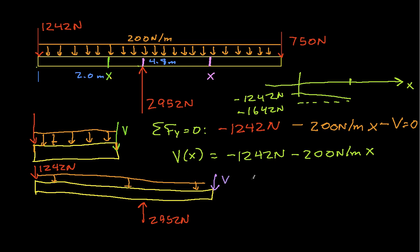So, we sum everything in the y direction, set it equal to 0, and we have minus 1242 newtons, minus 200 newtons per meter times x, plus 2952 newtons, minus V equals 0. And when we solve this for V, it is a function of x,